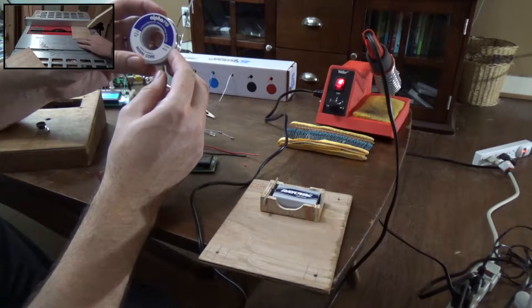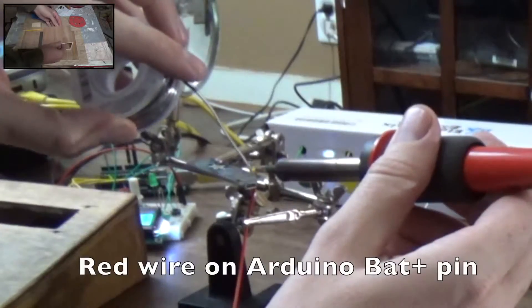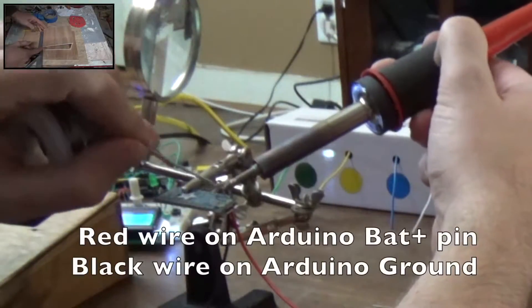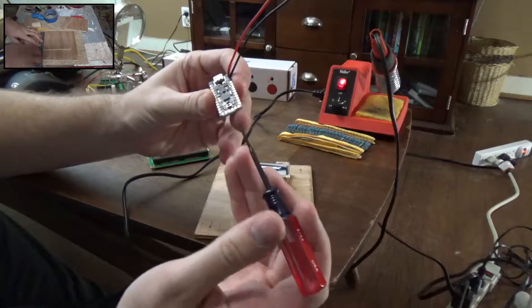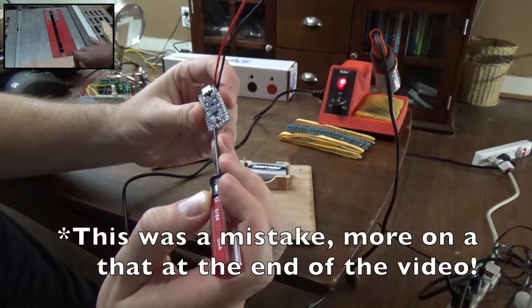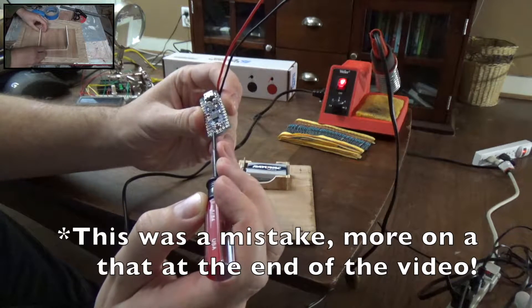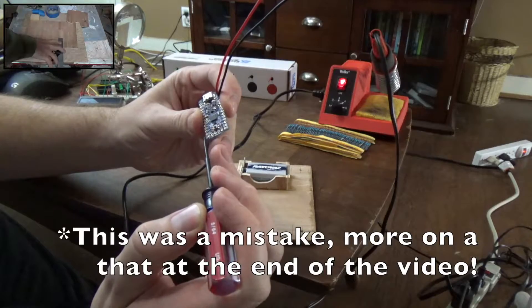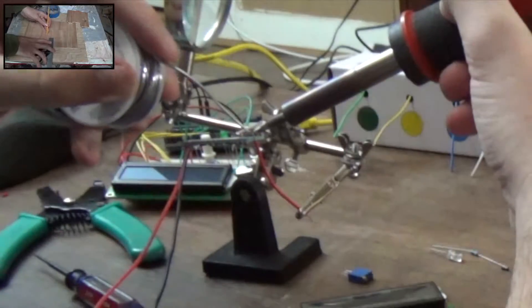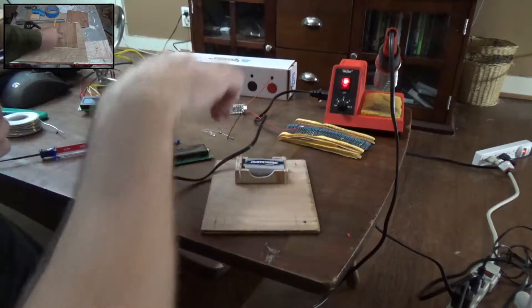The solder I'm using is 60/40 rosin core solder. As I just said, red on battery positive and black on ground. Next we want to do a red line on the 5 volt here and then black line on one of these two grounds. Now we're going to set this aside and start wiring up this board.